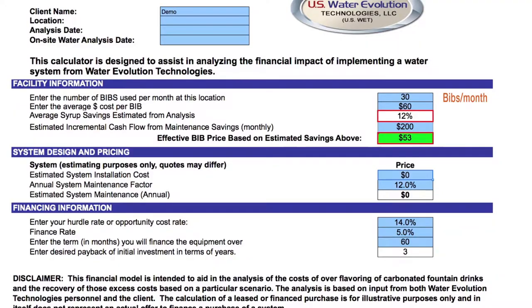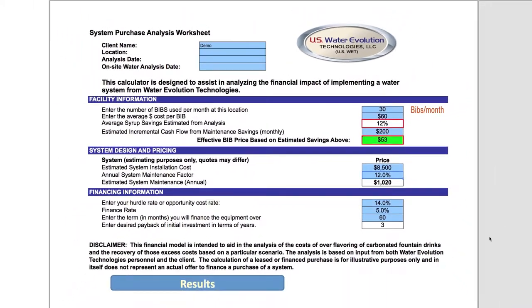In this particular scenario, our equipment is custom built for the needs of each location, but here we're going to use the number of $8,500. We'll run about a 12 percent maintenance factor on it, and we have financing expenses of about 5 percent on a five-year term. And we're going to see what that investment results in.